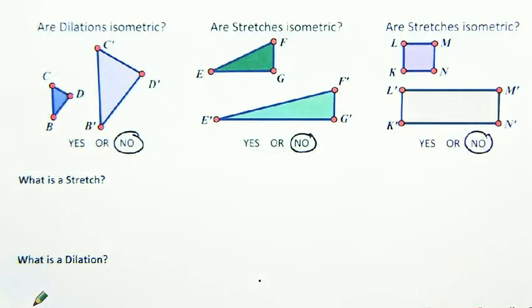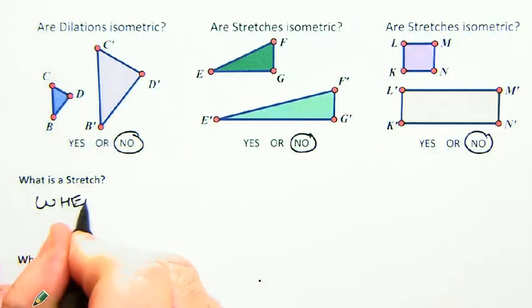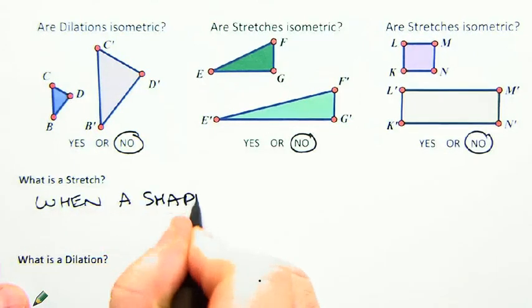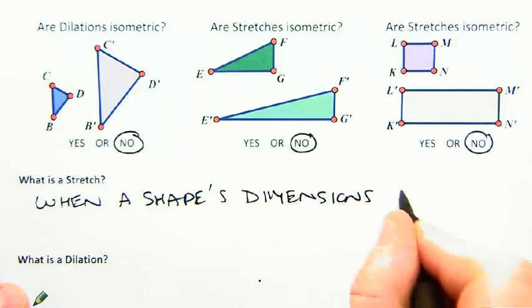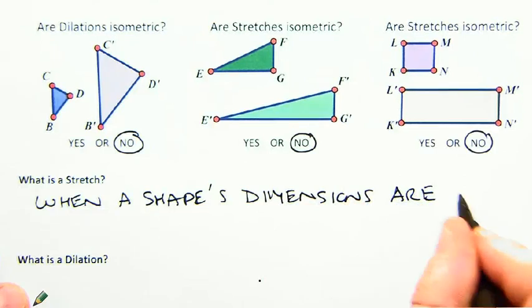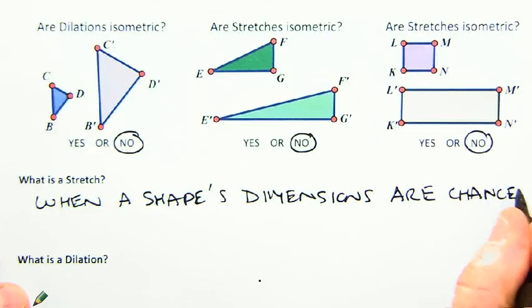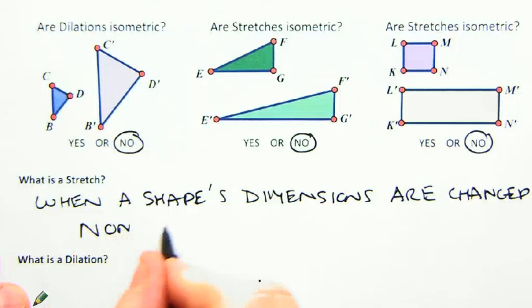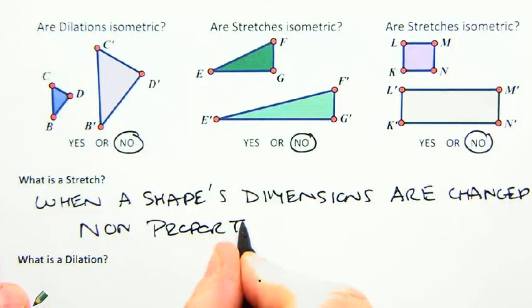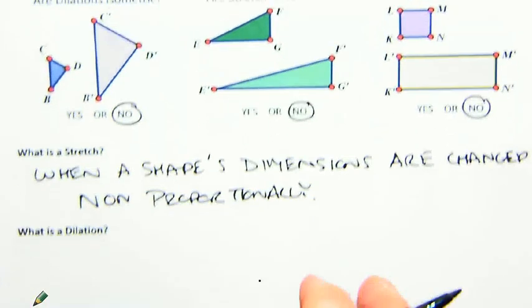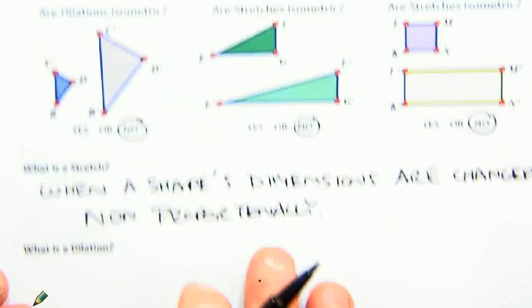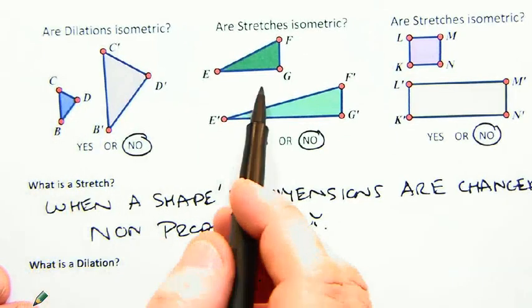This might be a good time to tell you what we mean by a stretch. A stretch is when a shape's dimensions are changed non-proportionally. So that could mean only one dimension got changed. It could mean both are getting changed, but differently. Now a dilation is kind of like that. Notice this is a dilation look. This is a stretch look.